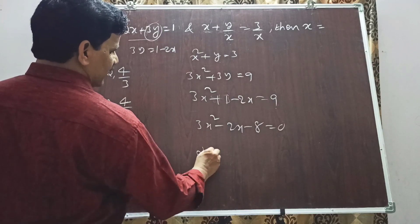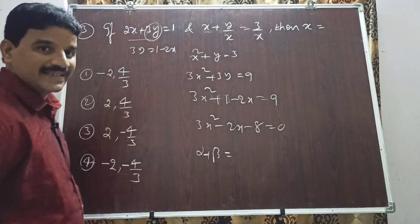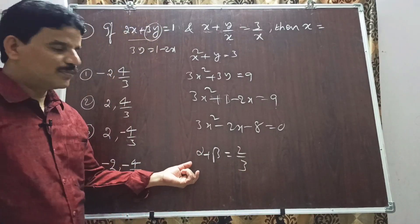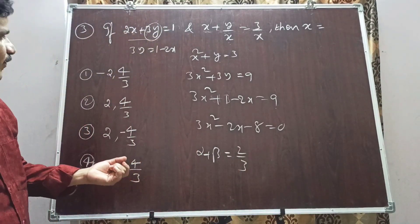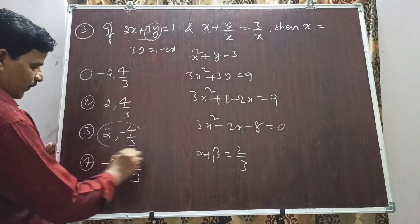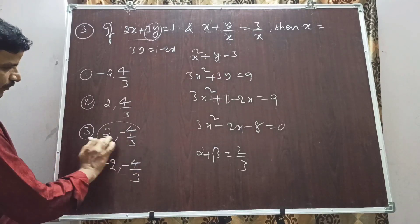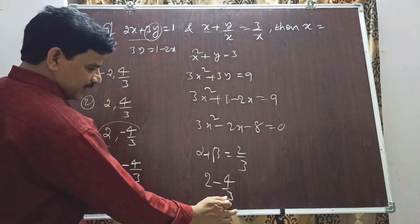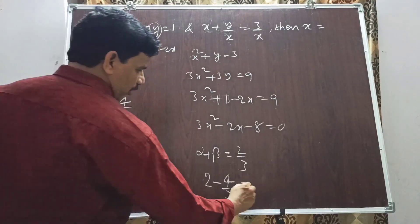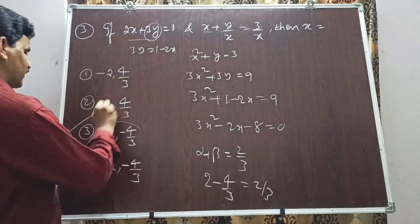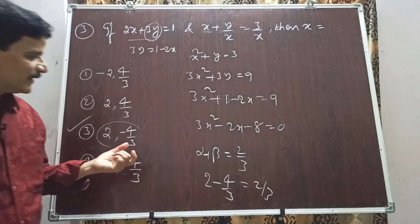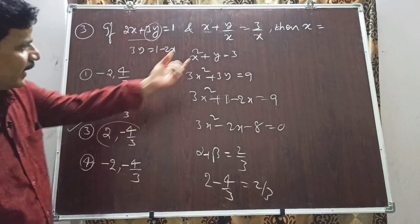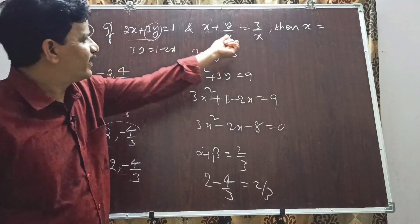Sum of roots = -b/a = -(-2)/3 = 2/3. Checking option 3 (2 and -4/3): their sum is 2 + (-4/3) = 6/3 - 4/3 = 2/3. Therefore option 3, x = 2 or x = -4/3, is the right answer.